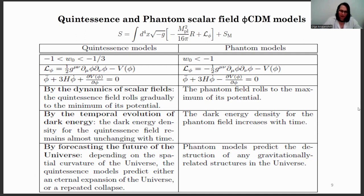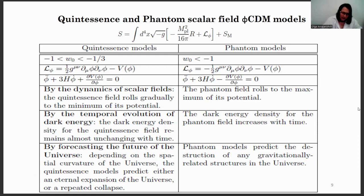By the temporal evolution of dark energy: the dark energy density for the quintessence field remains almost unchanging with time, while the dark energy density for the phantom field increases with time. By forecasting the future of the universe, depending on spatial curvature, the quintessence models predict either an eternal expansion or a repeated collapse, while phantom models predict the destruction of any gravitationally bound structures in the universe.